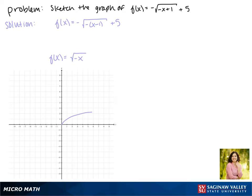Because we're taking the square root of negative x, that reflects our function across the y-axis. And the negative out front reflects our function across the x-axis.